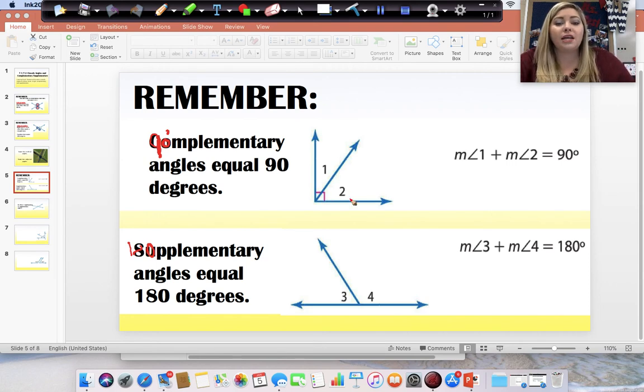So, the two angles that are complementary equal 90 degrees together. And, the two angles that are adjacent, right next to each other, and equal 180 degrees. Those are supplementary angles.